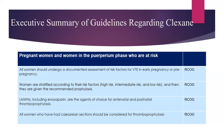Women are stratified according to risk factors into high, intermediate, and low risk, and are then given the recommended prophylactics. Low molecular weight heparin, including enoxaparin, is the agent of choice for antenatal and postnatal thromboprophylaxis. All women who have had caesarean section should be considered for thromboprophylaxis — this is very important because we have a very high rate of caesarean section in Egypt.